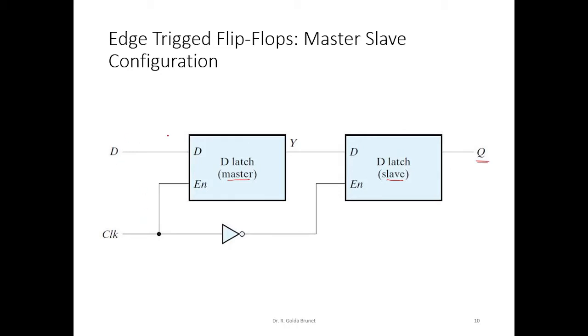Now, assume that Q has some value, say 0, and we are trying to set the circuit so that Q equals 1. Therefore, we supply D equals 1 here. When clock is 0, only this is enabled.